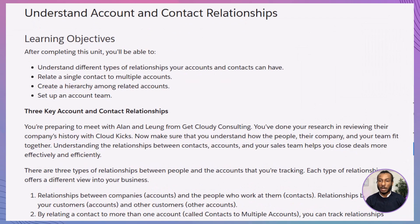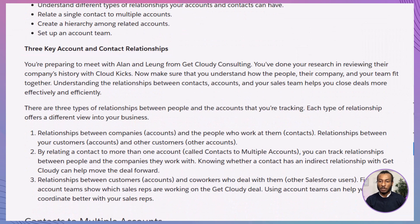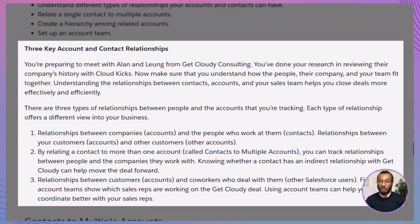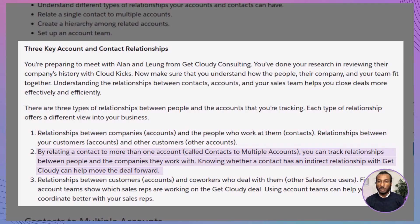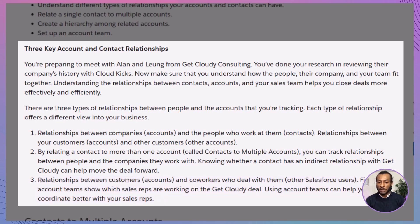Let's begin by identifying the three types of relationships. Salesforce tracks three key relationship types to help you seamlessly manage connections between accounts, contacts, and your internal teams: contacts to multiple accounts, which allows you to manage individuals who work with or influence more than one company; account hierarchies, which establish structured relationships among accounts, such as parent and subsidiary companies; and account teams, which identify the co-workers within your organization who collaborate on specific accounts.